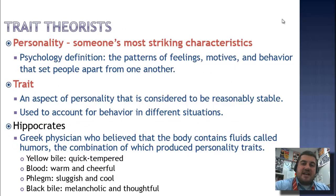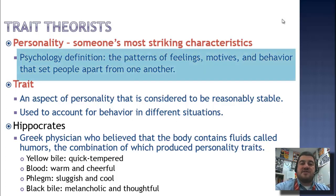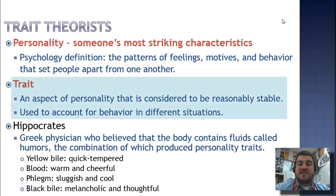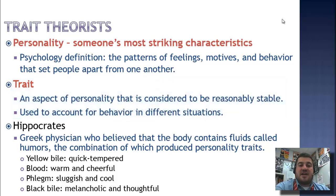A personality, in everyday conversation, you may say it was someone's most striking characteristics — that's just part of their personality. But the psychological definition of personality is the patterns of feelings, motives, and behavior that set one person apart from another. We're looking at their feelings, their behaviors, and their motives. A trait in trait theory is an aspect of personality that is considered to be relatively stable, and it can be used to account for behavior in different situations.